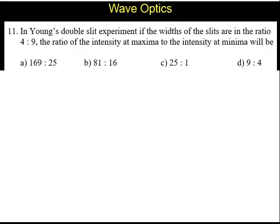Question number 11. In Young's double slit experiment, if the widths of the slits are in the ratio 4:9, the ratio of the intensity at maxima to the intensity at minima will be: a) 169:25, b) 81:16, c) 25:1, d) 9:4.